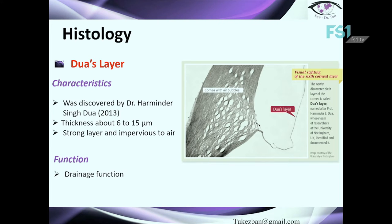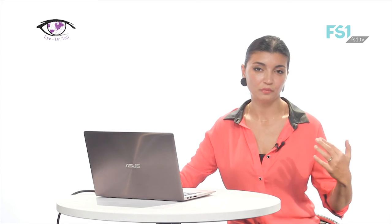Next is Dua's layer — a quite recently discovered layer, found only in 2013 by a team from India led by Harminder Singh Dua. The thickness is approximately 6 to 15 microns. It is a very strong layer, and its main function is a drainage function, as it takes part in the structure of the tissue that controls the flow of fluid from the eye.